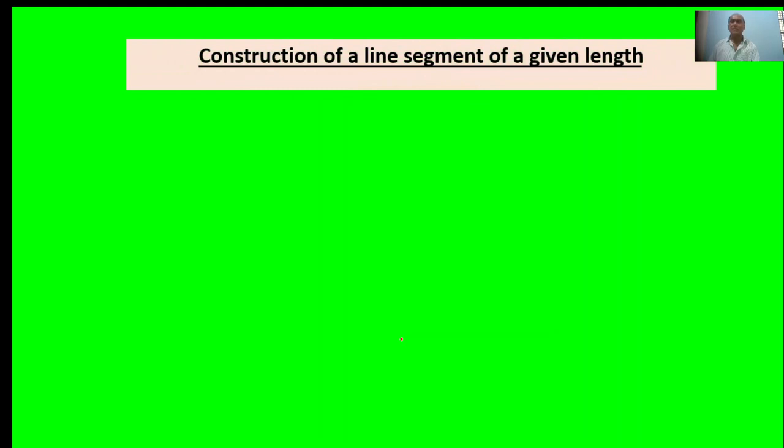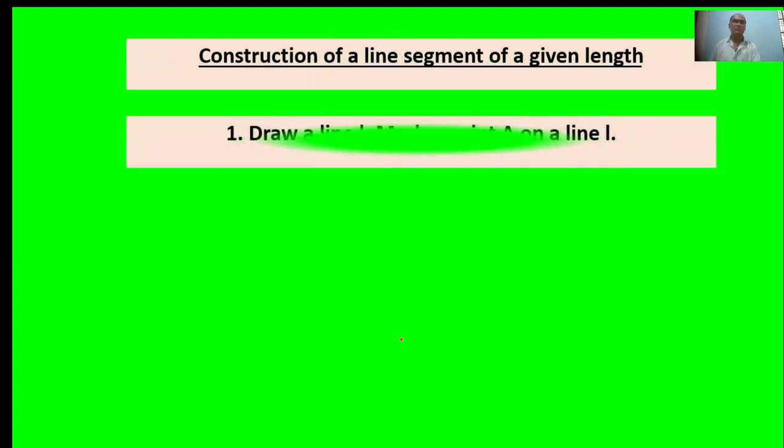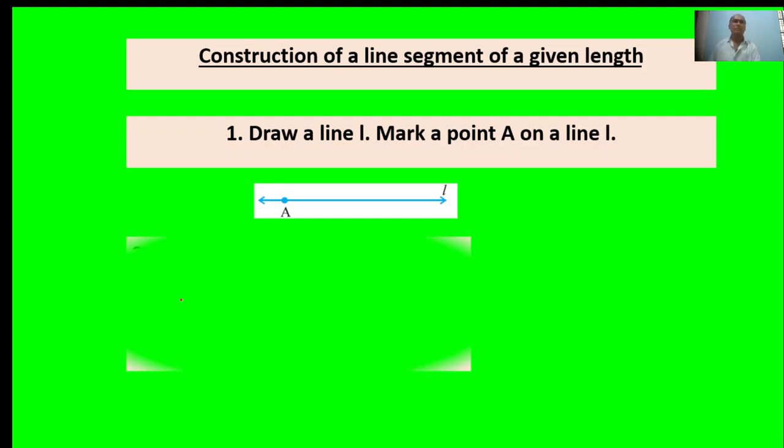Construct a line segment of a given length. First point: Draw a line L. Mark a point A on your line. Draw a line, point A, mark is given.